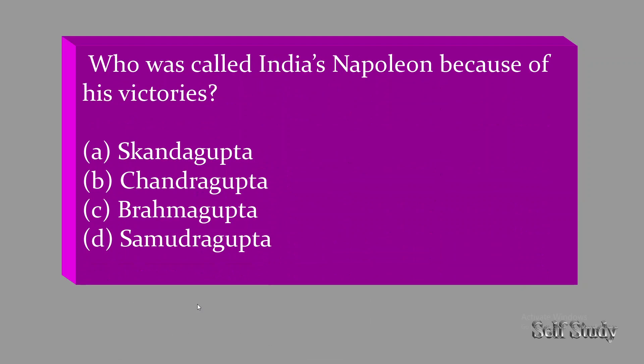Who was called India's Napoleon because of his victories? Options include Skanda Gupta, Chandra Gupta, Brahma Gupta, Samudragupta. The correct answer is D — Samudragupta. The options are probably there to confuse, but the correct answer is Samudragupta.